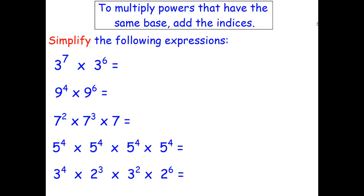Okay, let's go ahead now and use our rule for multiplying powers with the same base. So 3 to the power of 7 times 3 to the power of 6. Using the rule, it means we can just add the indices. And that gives us 3 to the power of 13.